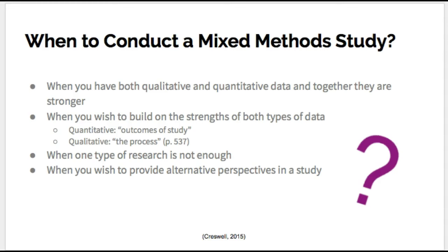Together they can paint a more thorough and complete picture. Furthermore, when one type of research isn't enough, mixed methods research allows the researcher to elaborate or extend on their findings. Mixed method research could be used to provide alternative perspectives to a study. Some examples of this include when someone asks for the numbers and the stories. You can utilize qualitative data when you want to provide further understanding on how the experimental intervention actually worked, in order to provide insight behind the outcomes of your quantitative data.